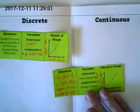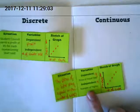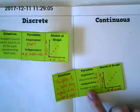Second situation. Price of a hotel stay depends on the number of nights. We did this one together. Discrete or continuous? Discrete.